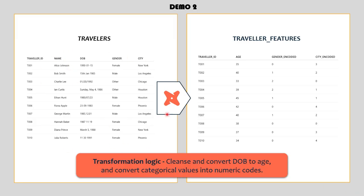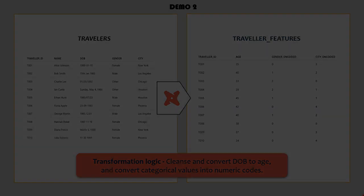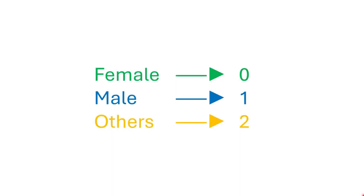Here's a sample travelers table in its raw form — not quite ready for ML yet. We need to do a few things: cleanse the date of birth values, which are stored in inconsistent formats, and convert them to age; and encode categorical fields like gender and city into numbers. In simple terms, encoding means representing categories using numbers. For example, in the gender column, the encoded value 0 represents female, 1 represents male, and 2 represents others.